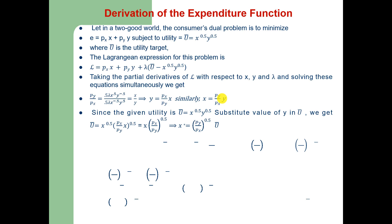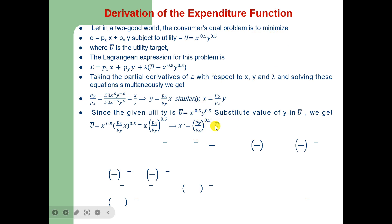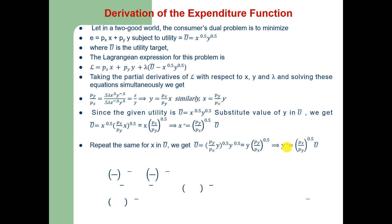Since the utility constraint is U-bar = X^0.5 · Y^0.5, substituting the expression for Y into U-bar gives X-star = (Py/Px)^0.5 · U-bar. Repeating the same substitution for X in the utility function gives Y-star = (Px/Py)^0.5 · U-bar.